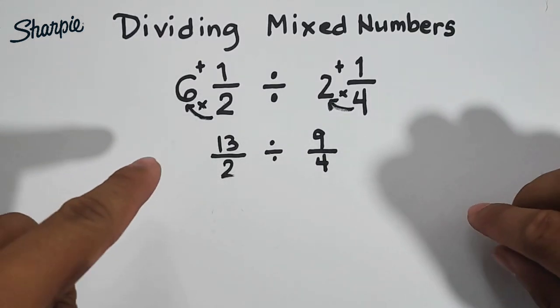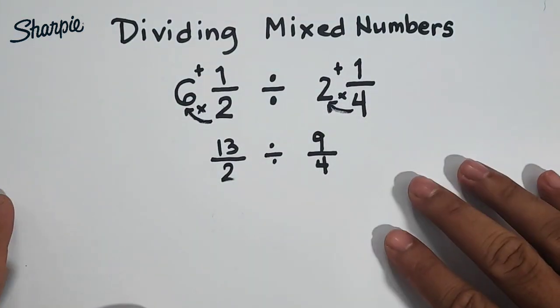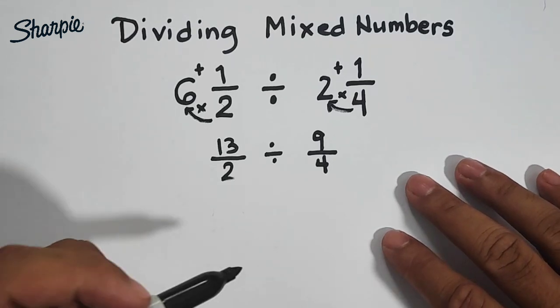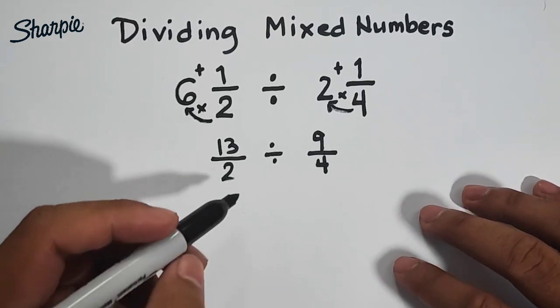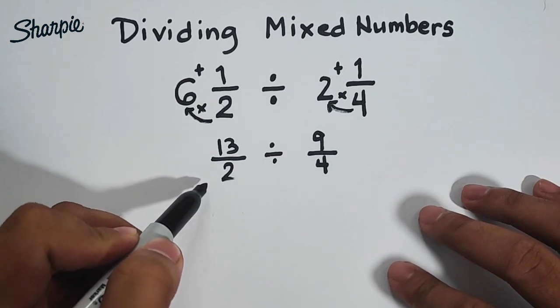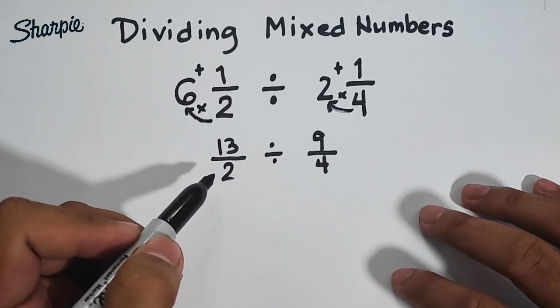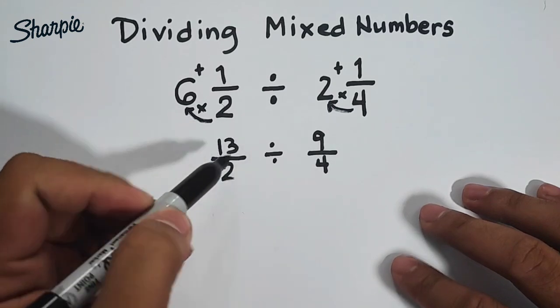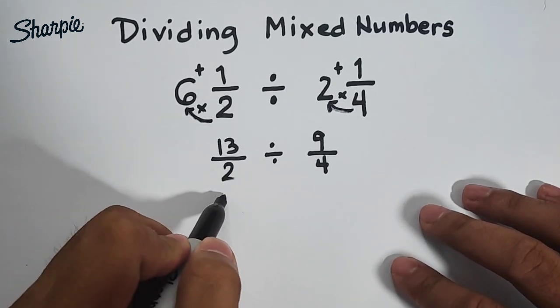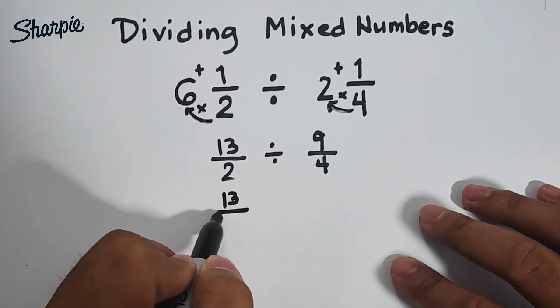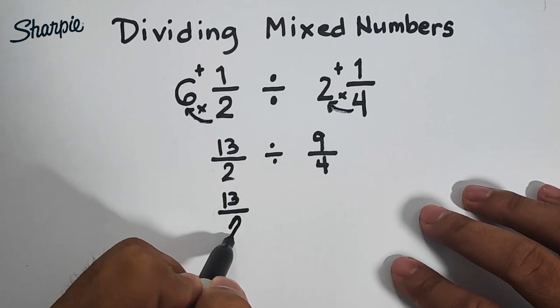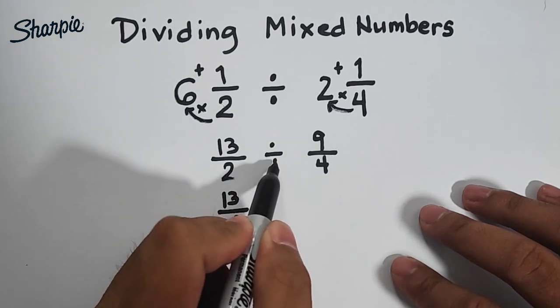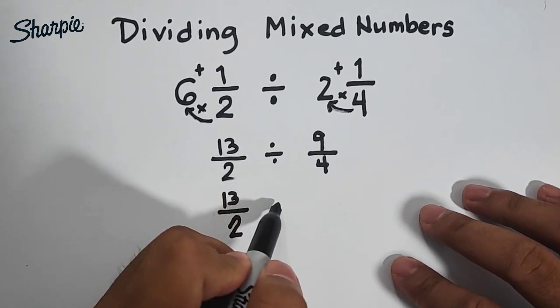Next step, after converting these two mixed numbers into improper fractions, we will proceed to the multiplication part. So by the way guys, when you are dividing fractions, you will go with multiplying. First, copy this first fraction, 13 over 2. Then change your operation to multiplication.